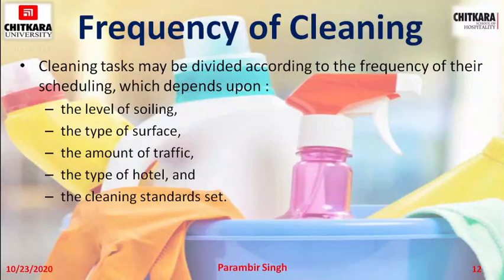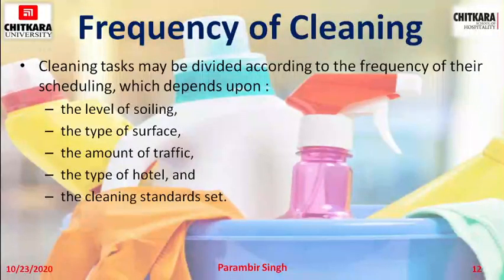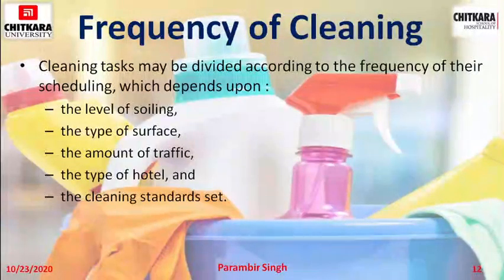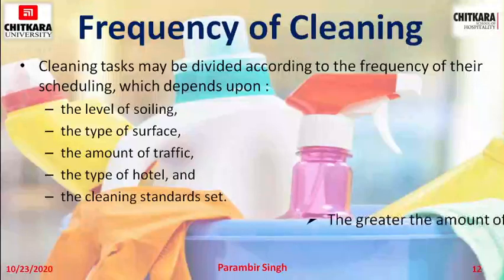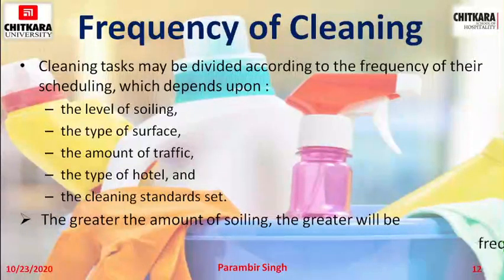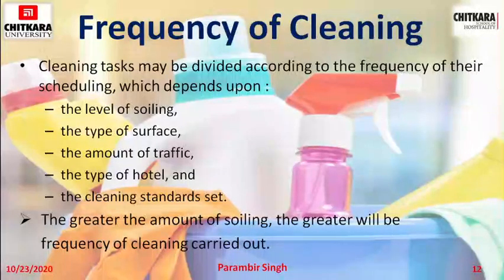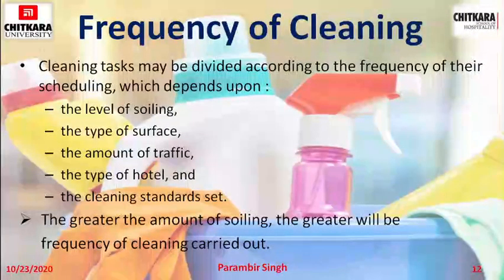The level of soiling is the amount of dirt or dust coming in. The type of surface could be wooden, ceramic tile, or marble floor. The amount of traffic depends on the number of footfall — the number of people moving in that area. The type of hotel could be a business hotel or a normal tourist hotel. Cleaning standards and the type of cleaning methods used also depend upon the frequency of cleaning. The greater the amount of soiling, the greater will be the frequency of cleaning carried out.